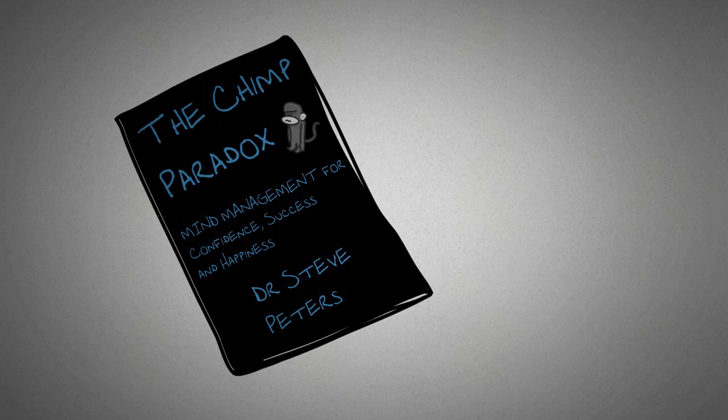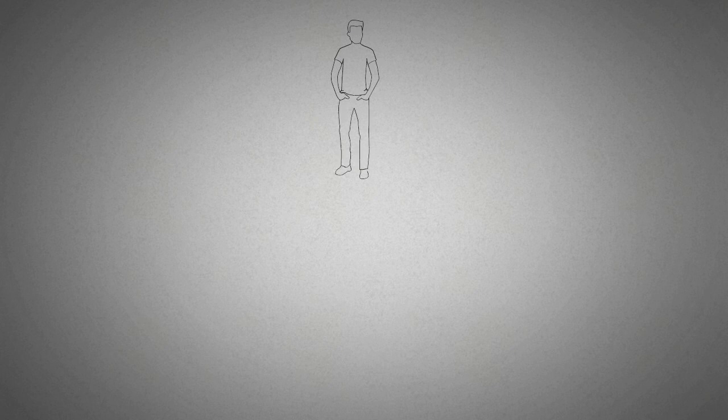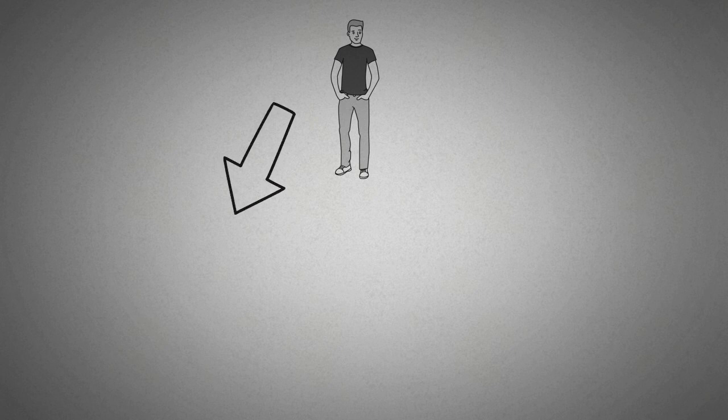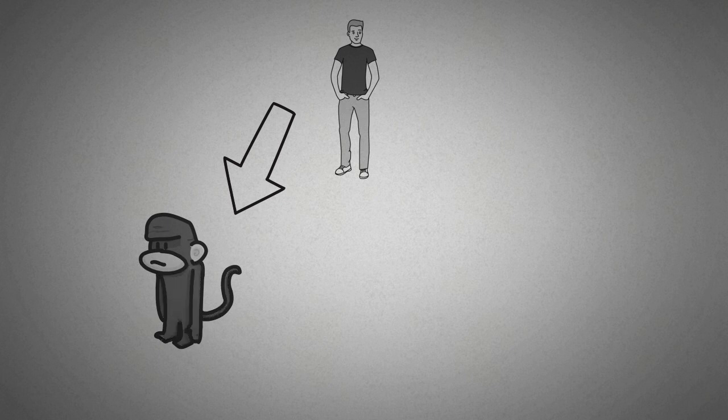Steve Peters in his book The Chimp Paradox describes the parts of the mind and how they work together and sometimes in conflict. The three different parts we have to be aware of and manage if we are to remain in control and achieve our objectives are our human, our chimp, and our computer.